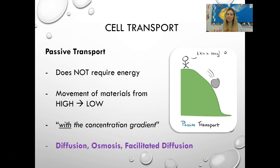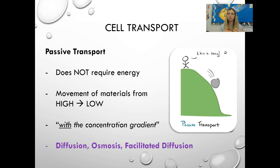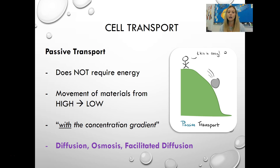Passive transport doesn't require energy because this is what molecules want to do. Molecules want to move from a high concentration to a low concentration — they want to spread out as much as they can. They travel with the concentration gradient, from high to low, like swimming downstream. It's like rolling a rock down a hill — going from high to low, it doesn't take any work or energy. The examples of passive transport are diffusion, osmosis, and facilitated diffusion.